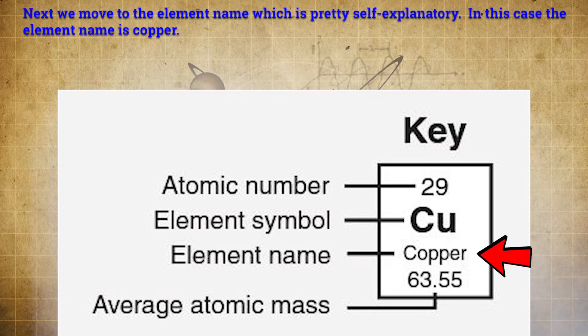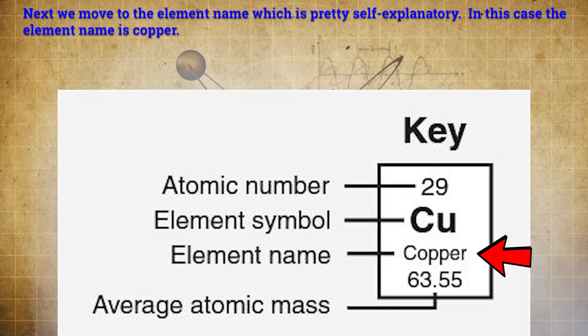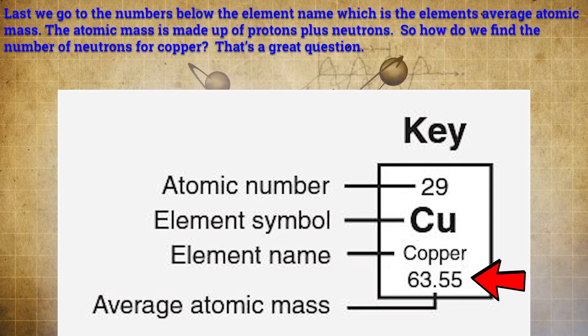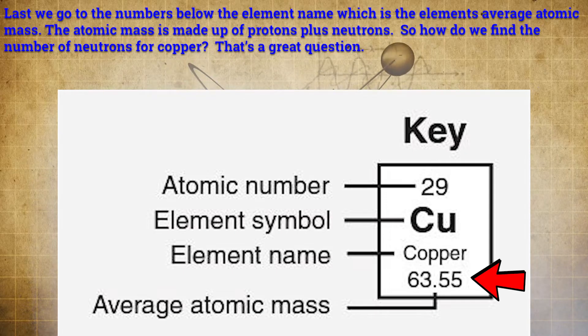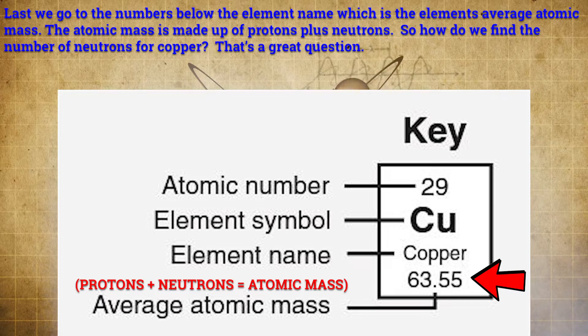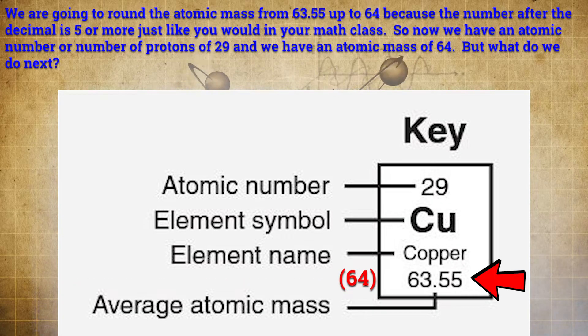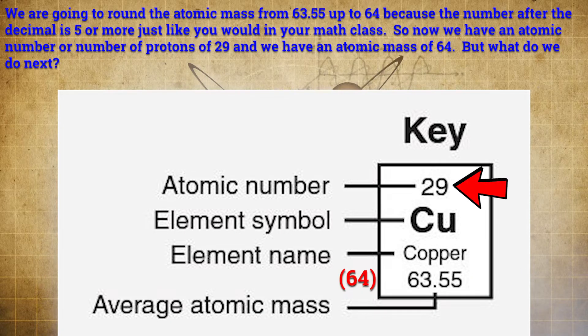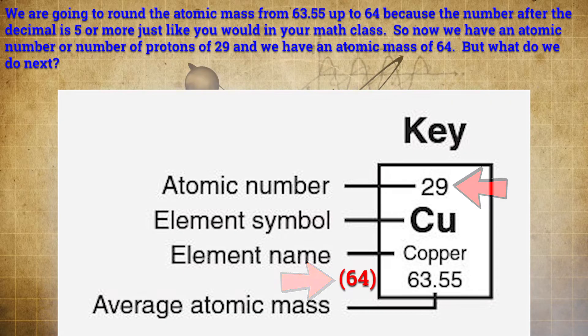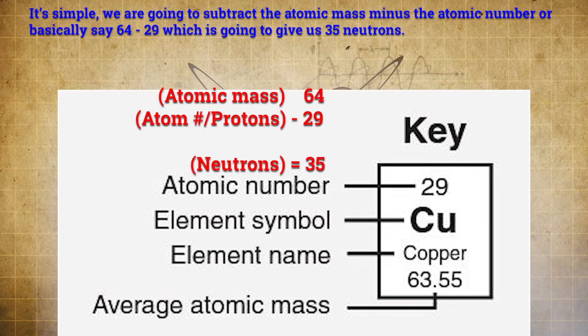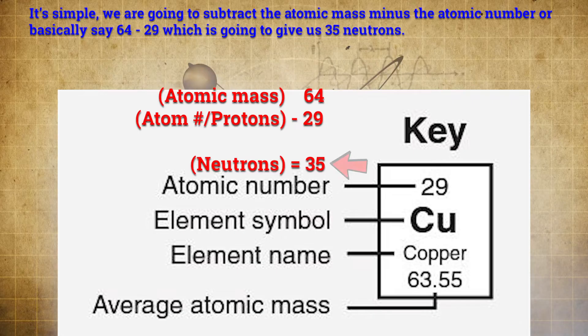Next, we move to the element name, which is pretty self-explanatory. In this case, the element name is copper. Last, we go to the numbers below the element name, which is the element's average atomic mass. The atomic mass is made up of protons plus neutrons. So how do we find the number of neutrons for copper? That's a great question. We're going to round the atomic mass from 63.55 up to 64 because the number after the decimal is 5 or more, just like you would in your math class. So now we have an atomic number or number of protons of 29, and we have an atomic mass of 64. But what do we do next? It's simple. We're going to subtract the atomic mass minus the atomic number, or basically say 64 minus 29, which is going to give us 35 neutrons.